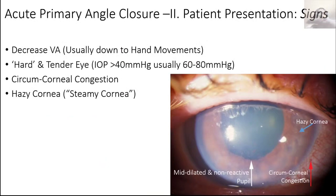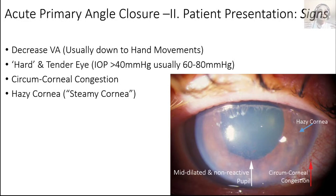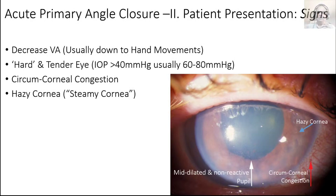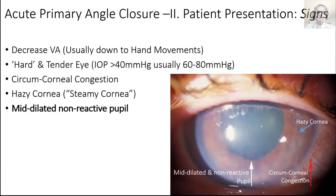Additional signs: decreased visual acuity down to hand movements, a hard and tender eye on digital tonometry, and intraocular pressure more than 40 mmHg — usually 60 to 80 mmHg. Compare this to open angle glaucoma where pressure hardly ever rises above 40. The mid-dilated non-reactive pupil is the essential sign that distinguishes acute primary angle closure from acute anterior uveitis on torch examination.